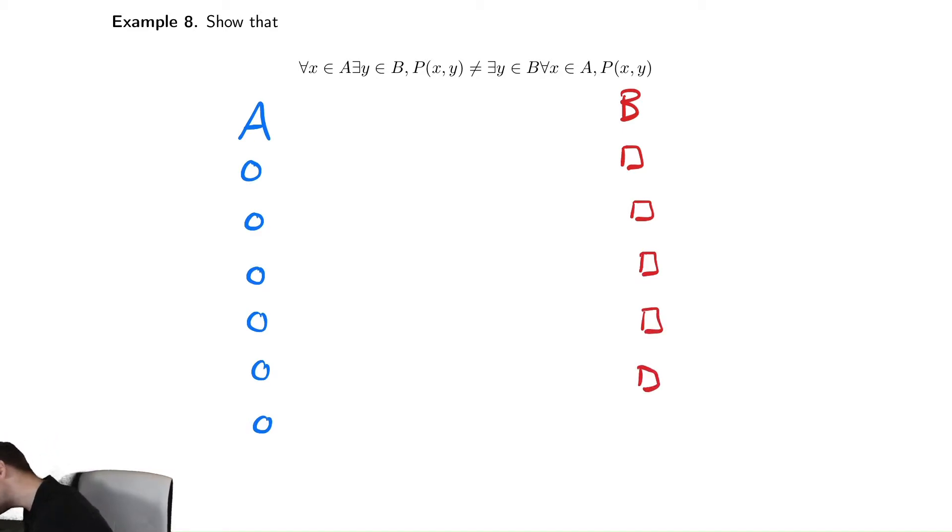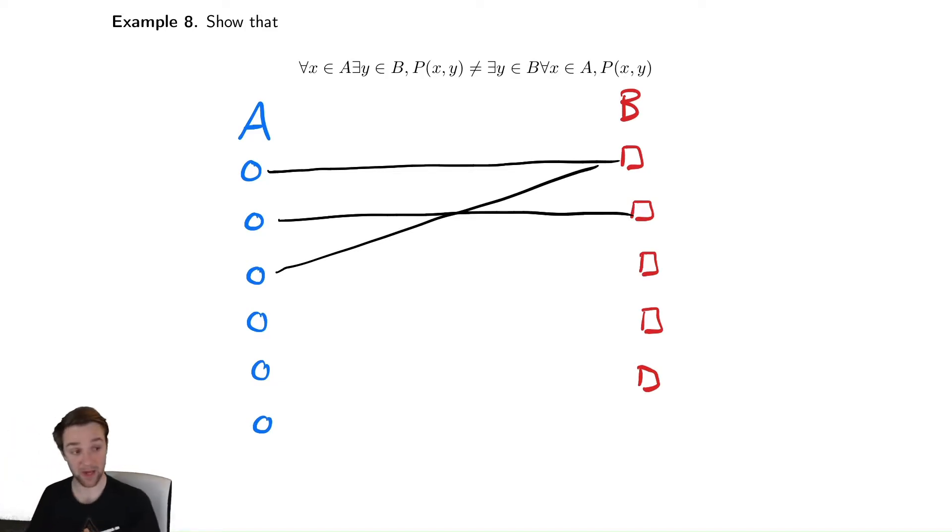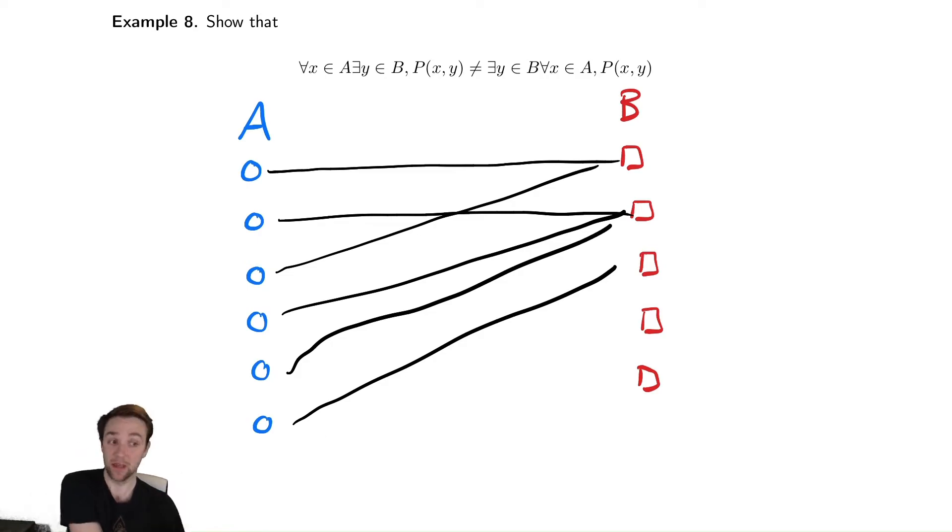And the statement on the left says that for every X in A, so that's all the blue circles that I drew, there is a Y. So I'm going to visualize that connection of saying for every X there exists a Y by drawing a line between them. So for every single one of these things in A, they're connected to something in B. And it can be the case that there's some overlap there. So it could be the case that it looks something like this.